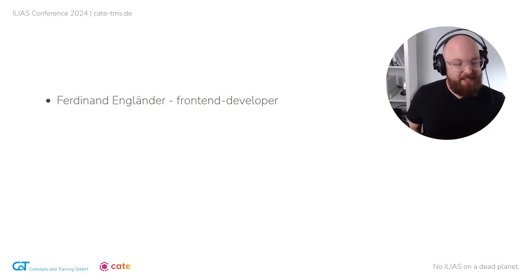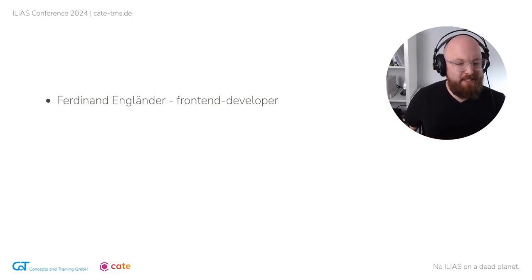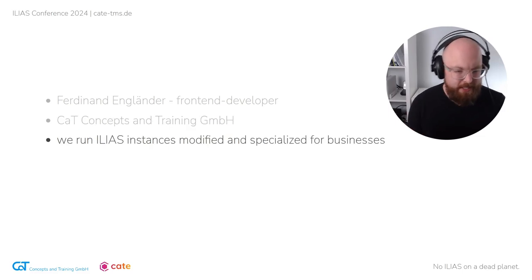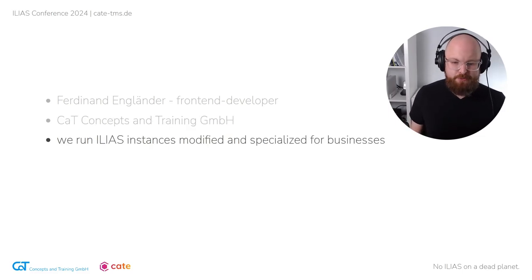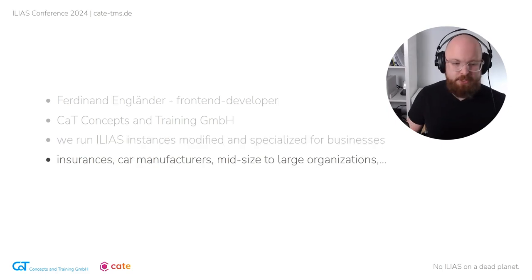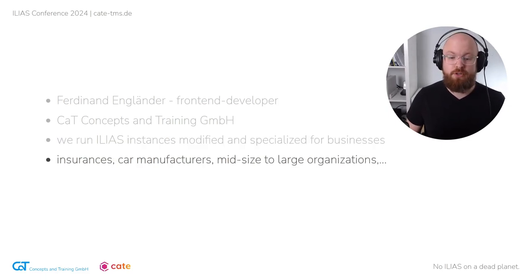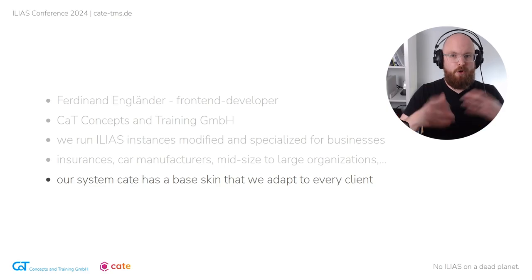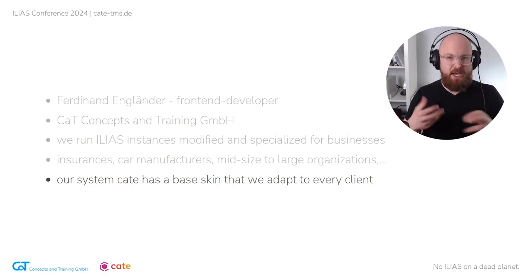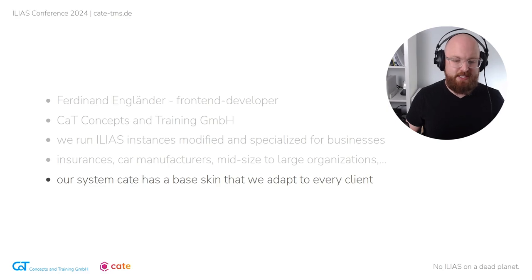My name is Ferdinand Engländer. I'm a front-end developer at CAT Concepts and Training. We run ILIAS instances that we call Kate, modified and specialized for businesses. We have clients that are insurances, car manufacturers, mid-sized to large organizations. Our system, Kate, has a base skin and this base skin we always adapt and tweak to fit specifically to the needs of our clients.